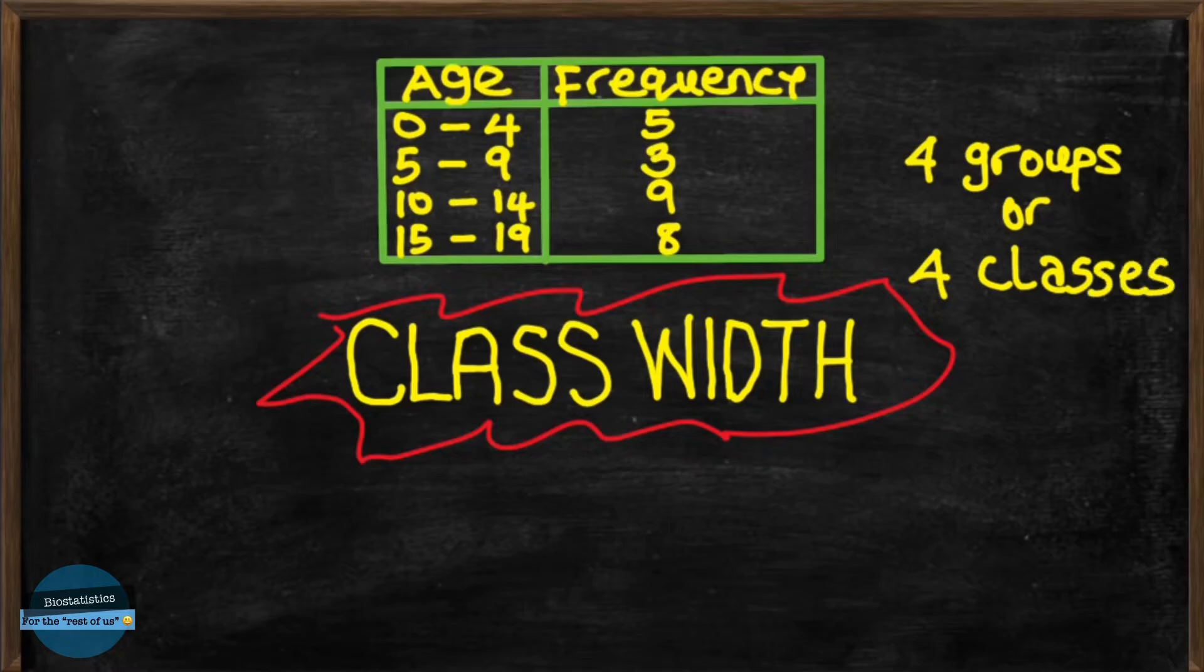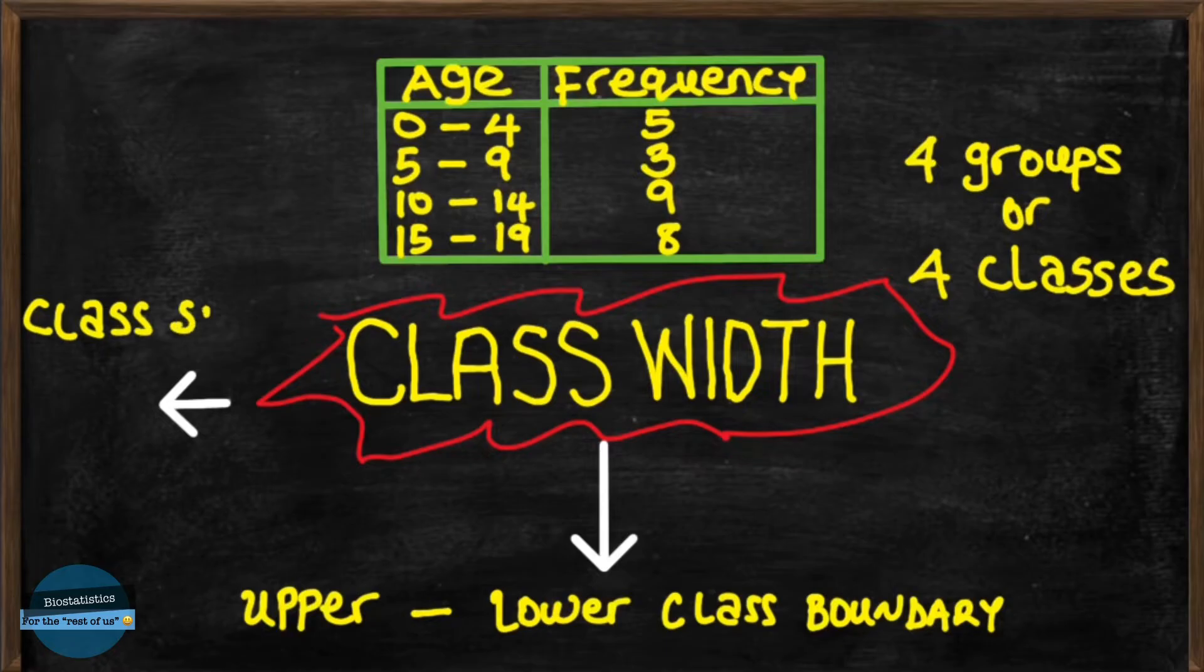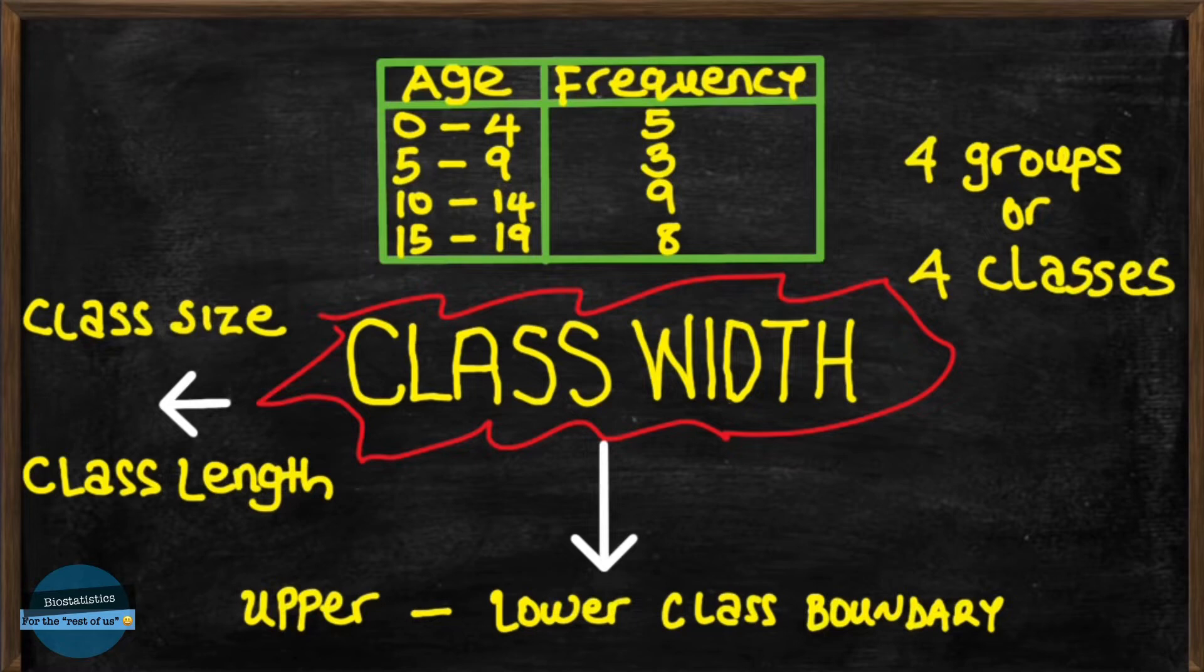In any group frequency distribution like this, when we say the class width, we are referring to the difference between any class upper and lower boundaries. This is also referred to as class size or class length by different scholars. So we can say class width or class length or class size and we all mean the same thing.